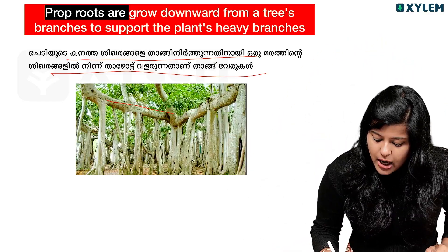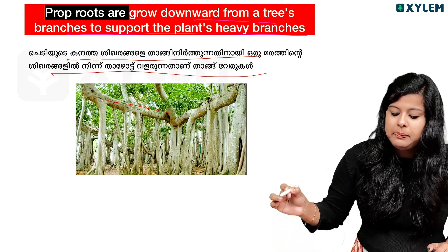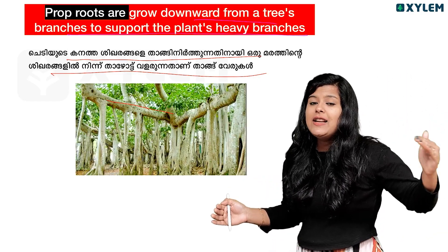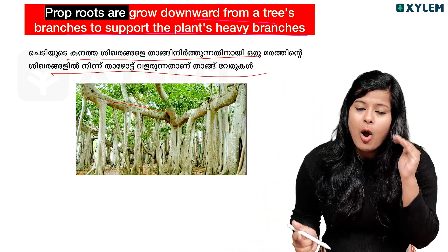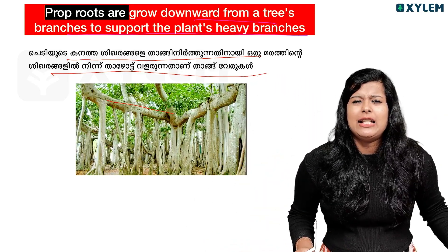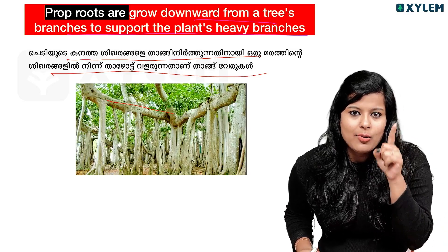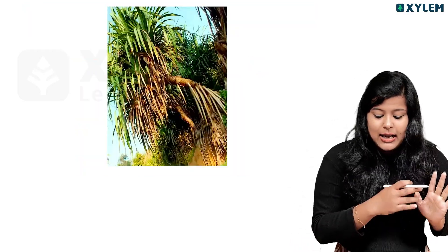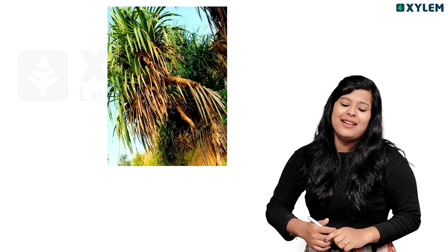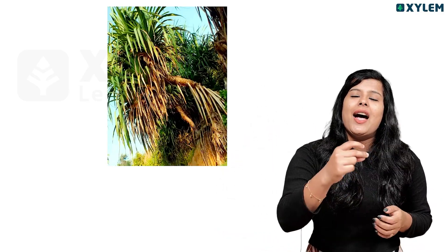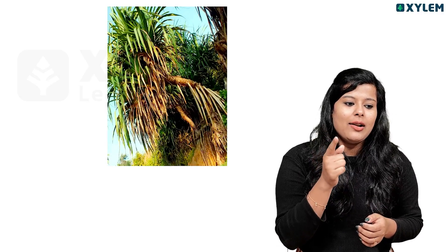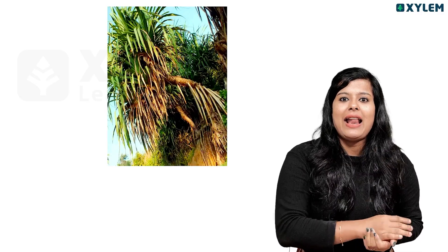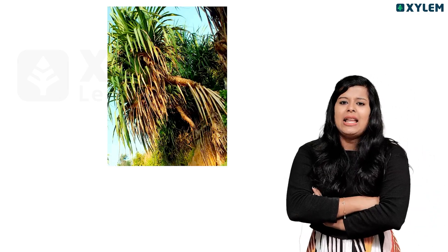The roots are growing downward from the tree branches to support the plant's heavy branches. The roots are growing — these are roots of the roots. Keep the leaves in the roots. And if you have roots, you can create more roots. A more specific kind of root — you need to remember the root.